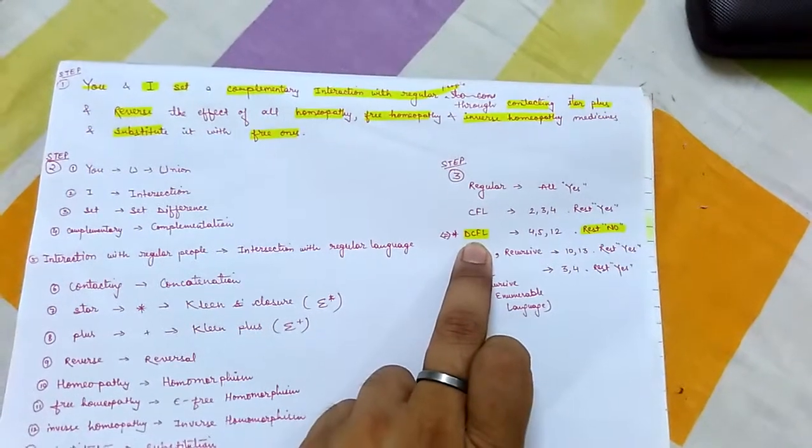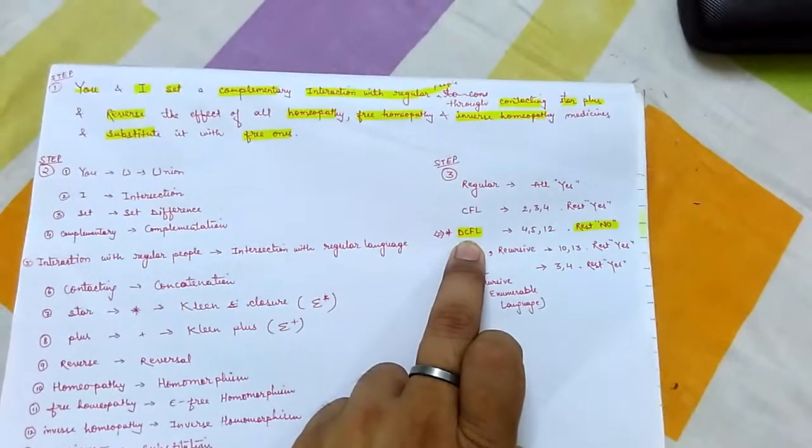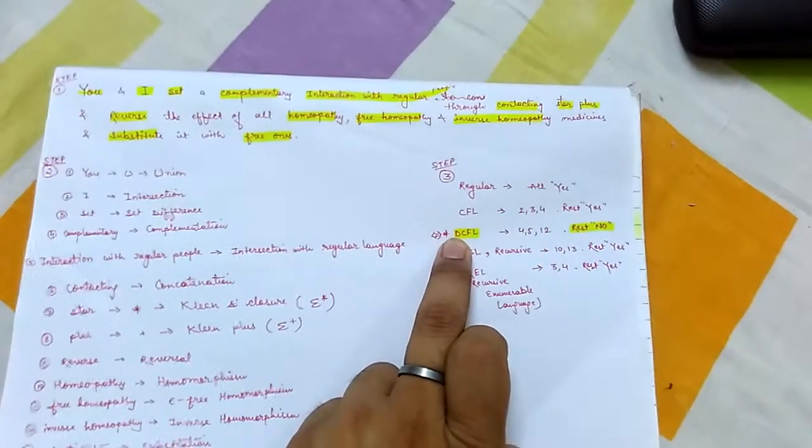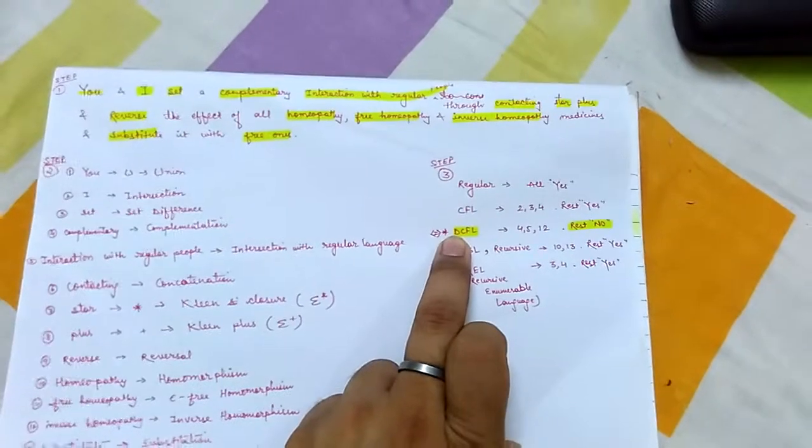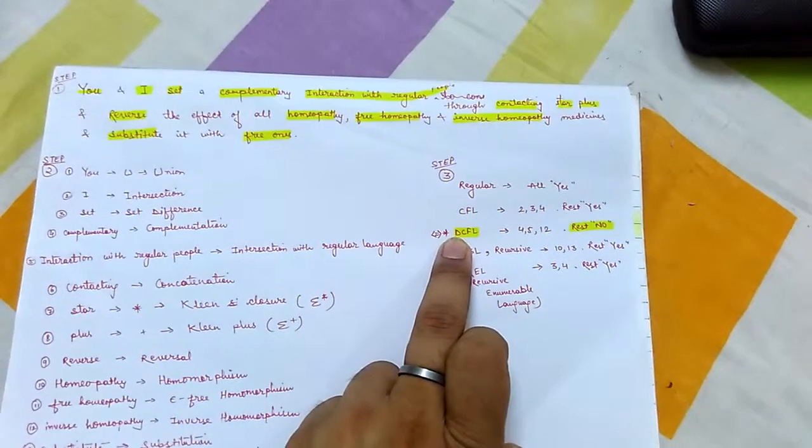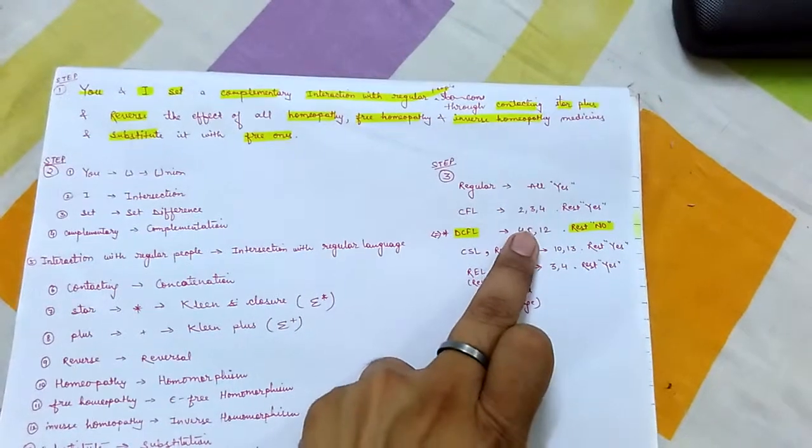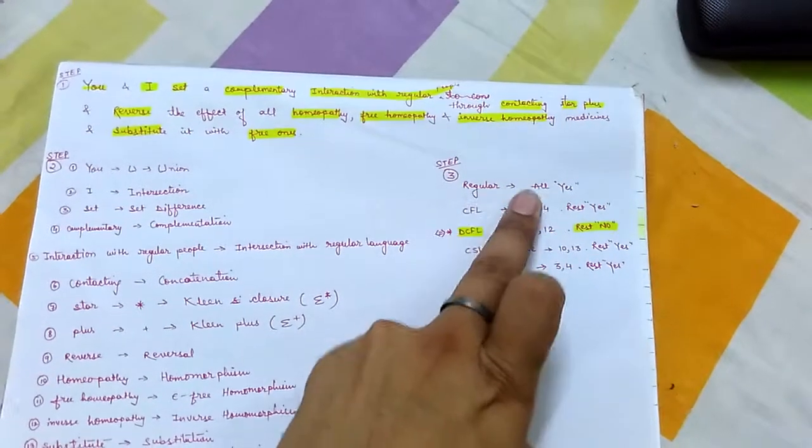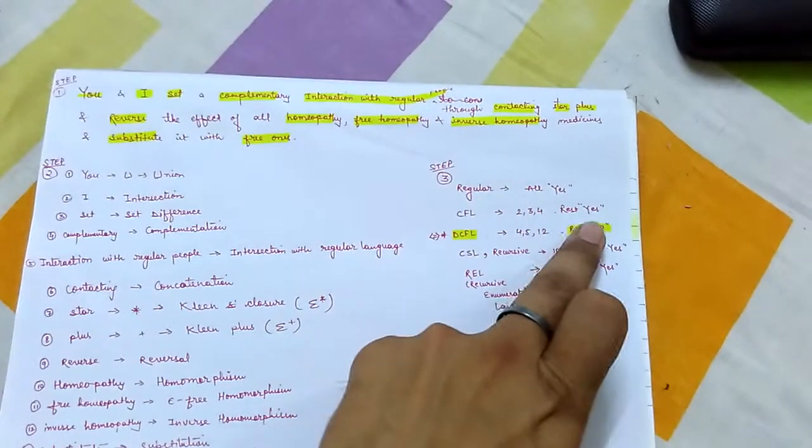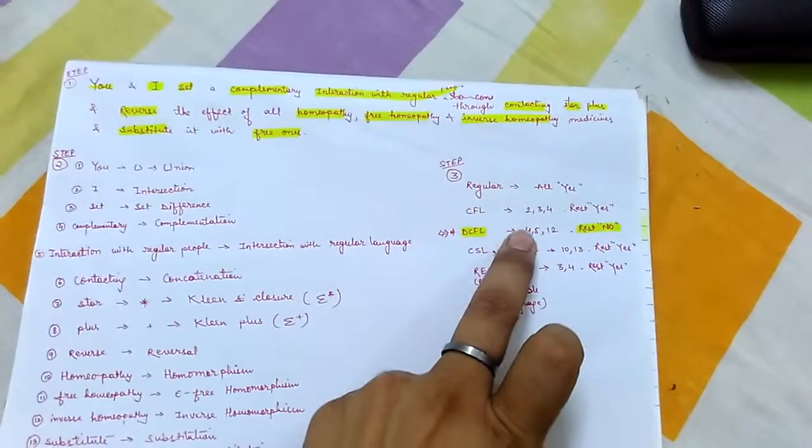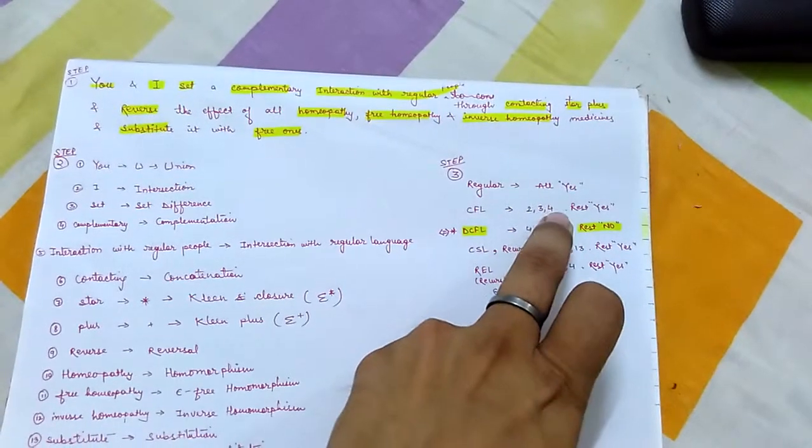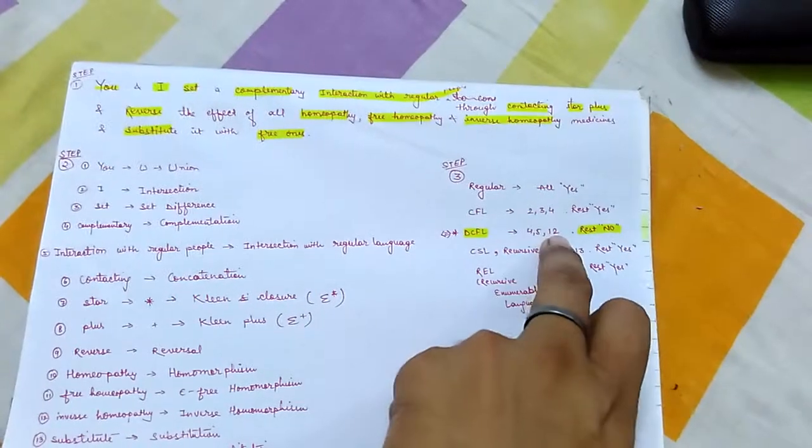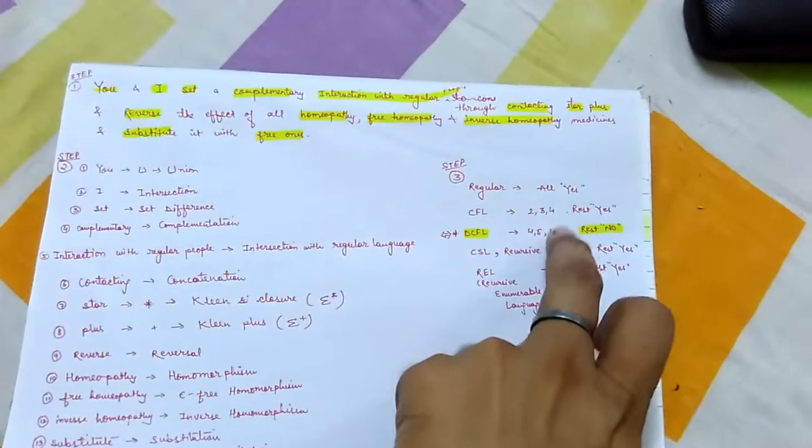Now move on to DCFL. Friends, please take care of this. DCFL, here most of them are not closed. In regular, all yes. In CFL, two three four no, rest yes. In DCFL, four five twelve are yes, included closed, rest not closed in DCFL.